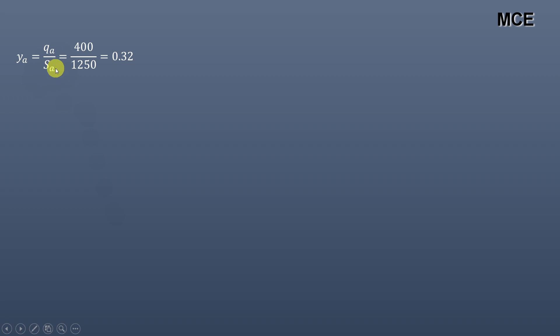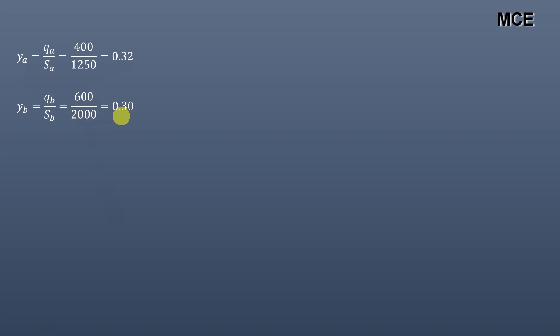The flow ratio yA for phase A is the normal flow divided by saturation flow: 400 / 1250 = 0.32. Similarly, yB = 600 / 2000 = 0.30. Capital Y, the sum of yA plus yB, is equal to 0.32 + 0.30 = 0.62.